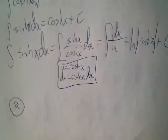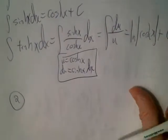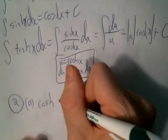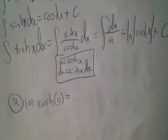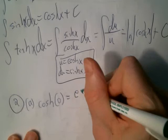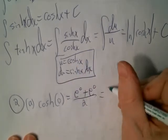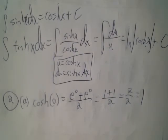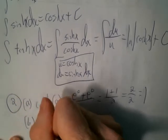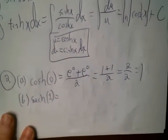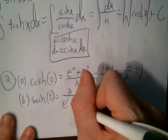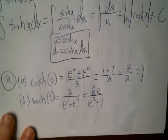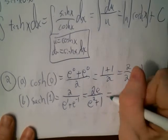To evaluate hyperbolic functions, you substitute and convert into exponentials. For example, cosh(0) is 1, as seen from the graph — or you can verify using the exponential definition. For hyperbolic secant of 1: sech(1) = 2/(e^1 + e^(-1)). Multiply top and bottom by e to get 2e/(e² + 1), which gives approximately 0.648.